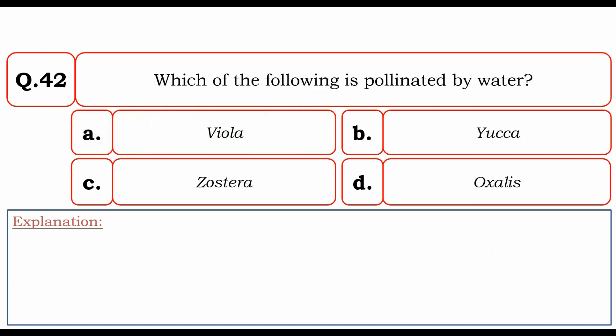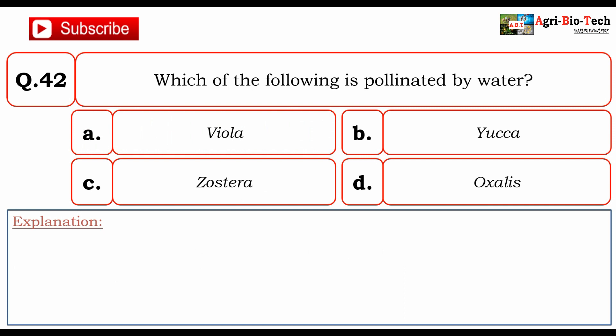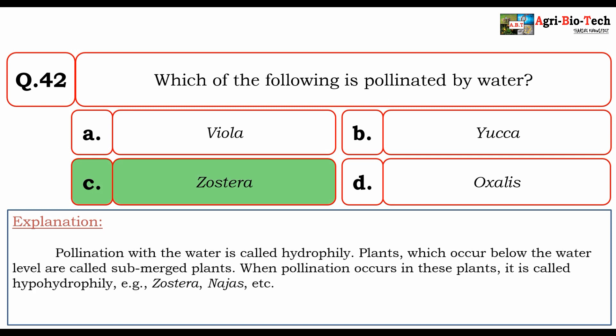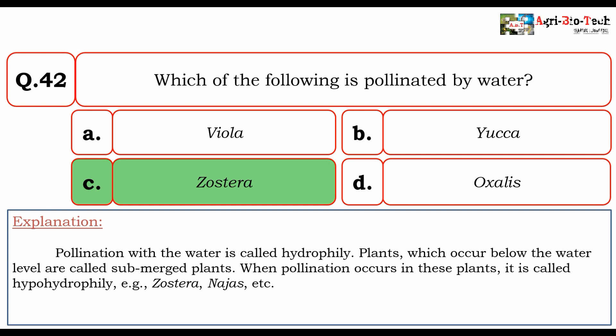Next question: which of the following is pollinated by water? Options are A) Viola, B) Yucca, C) Zostera, and D) Oxalis. The correct answer is C) Zostera. Pollination by water is called hydrophily. Plants that occur below the water level are called submerged plants, and when pollination occurs in these plants it is called hypohydrophily.